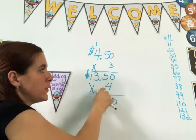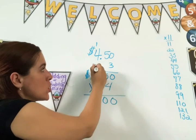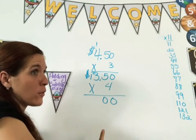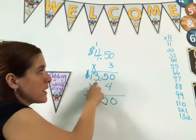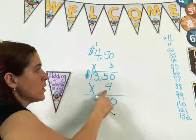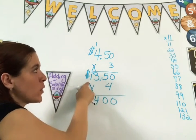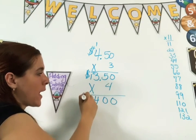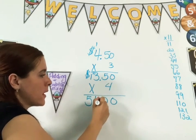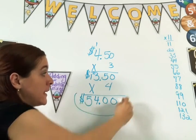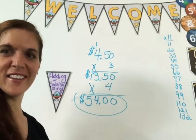Four times zero is zero. Four times five is 20. Put two up here because it's 20, right? Four times three is 12 plus two is 14. And put a one up here. Four times one is four plus one is five. One, two, point, because it's money. He made $54. He made a lot. And that is the end of today's lesson.